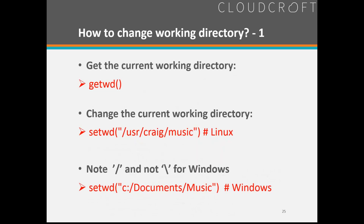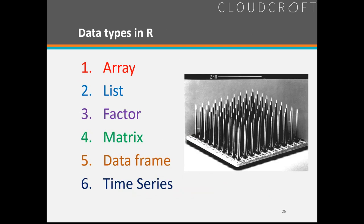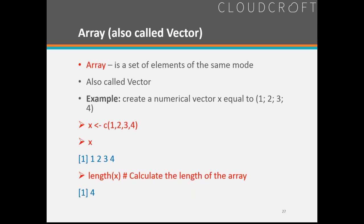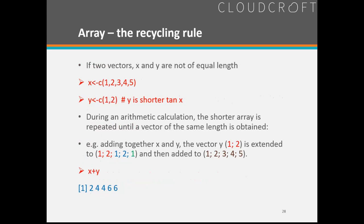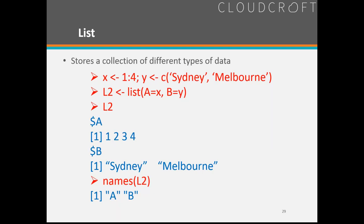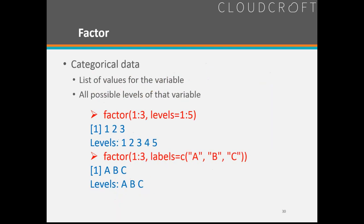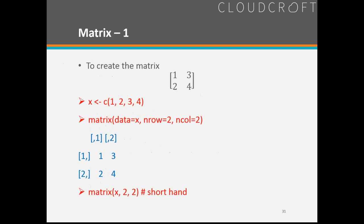Setting the working directory is different between Linux and Windows. Data types include array, list, factor, matrices, data frame, and time series — hopefully everyone knows the difference between all of those. We're going to cycle through this very quickly because we have one hour, and I'm going to cover a few different areas as well as going back to OpenMP.